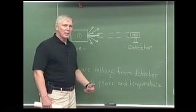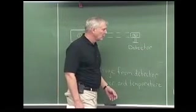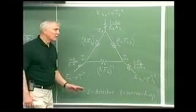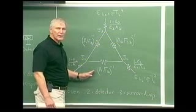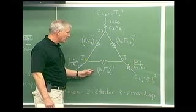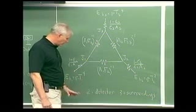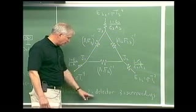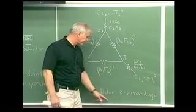A good way to characterize the behavior of this system is, first of all, to draw a circuit diagram, and I've drawn that here. The different points I've labeled: one as the oven, two as the detector, and three as the surroundings.